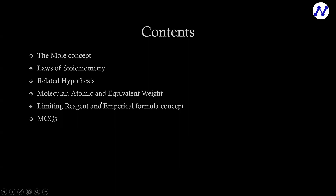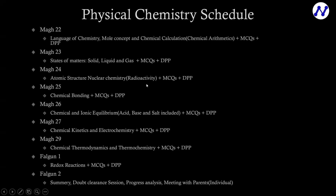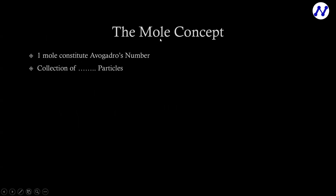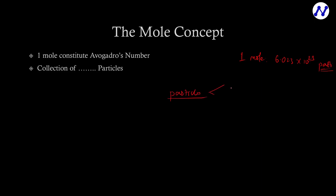So this is a small chapter. It is a number which represents the collection of something — number of particles. So 6.023 × 10²³ particles. So those particles may be atoms — 6.023 × 10²³ atoms.